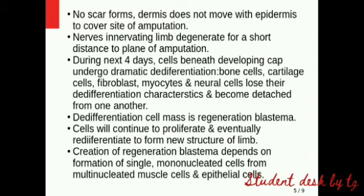The de-differentiated cells form a mass called the Regeneration Blastema. The cells will continuously proliferate. The new cells will become a new structure and form a new limb. This is how the salamander regenerates again.